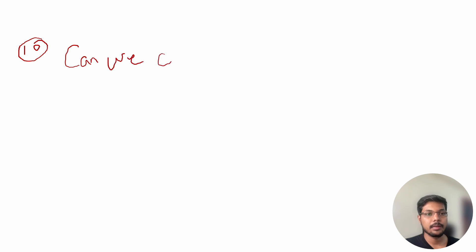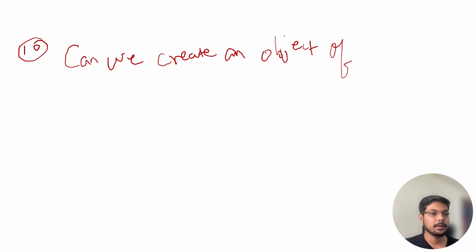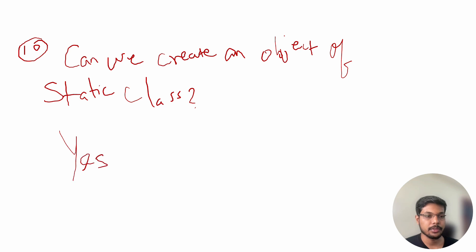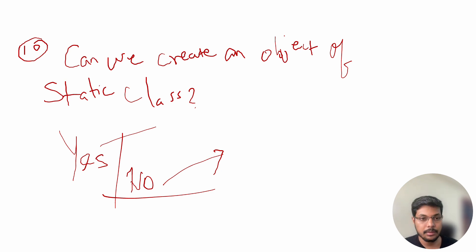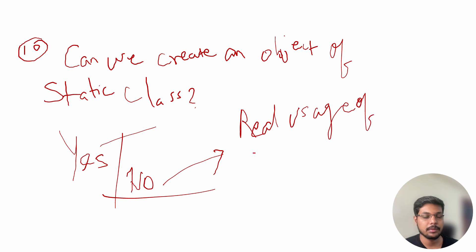Question number ten is: can we create an object of a static class? Make sure you answer yes or no first, and then explain why. If we can't create an object of a static class, why is that? You need to explain the reasoning behind why we can't create an instance of a static class.